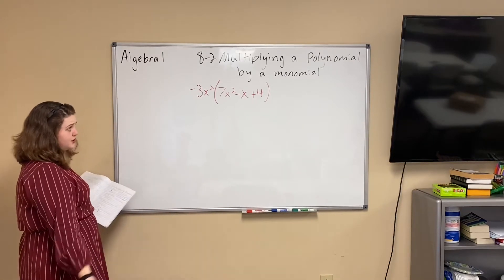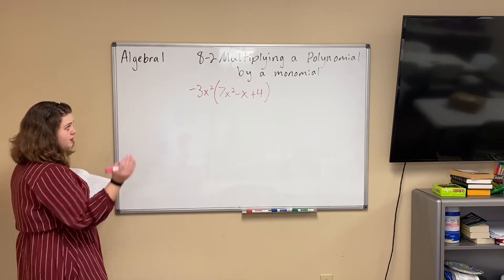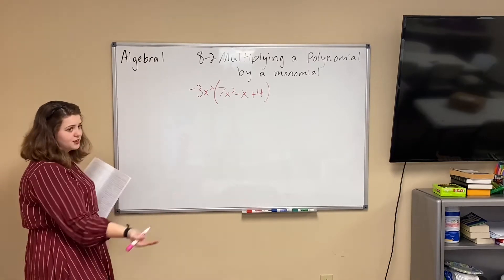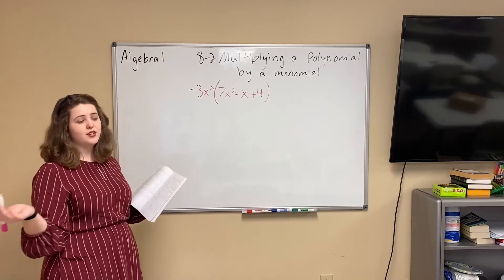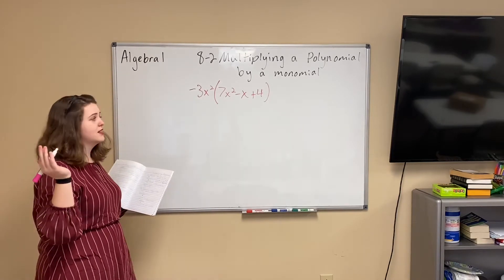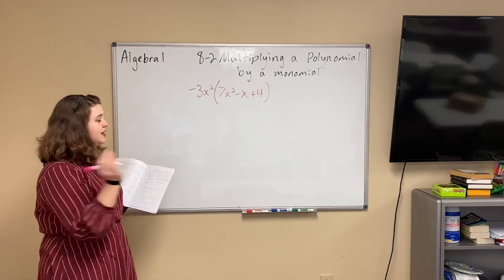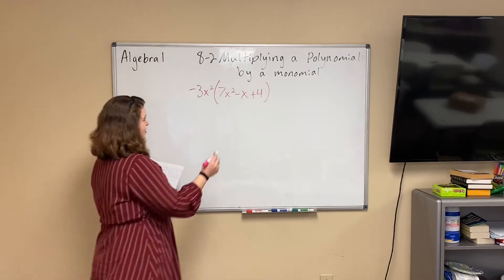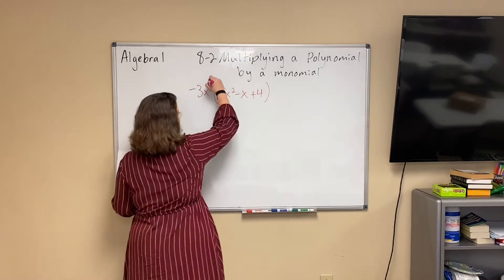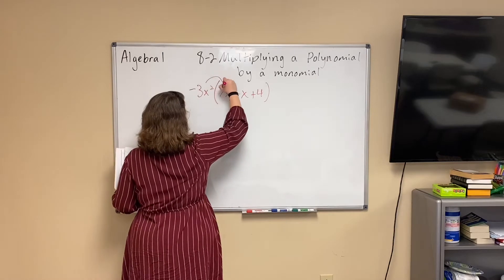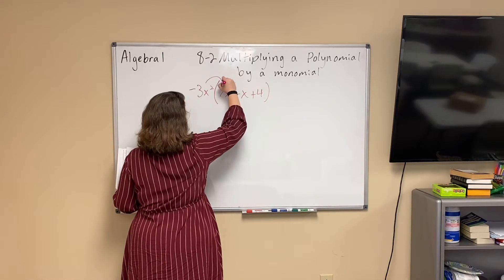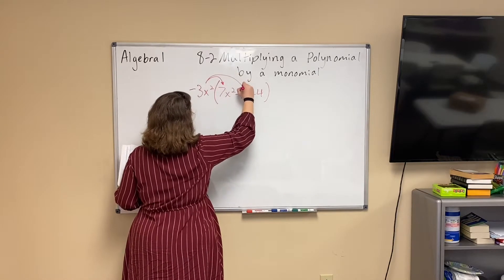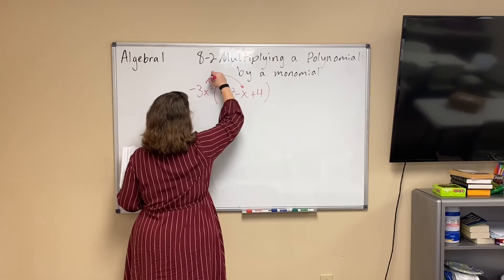Basically what you're going to do when you have one thing on the outside times several things on the inside, you're going to do the same thing you know to do with any number — use the distributive property. Multiply the thing on the outside by all of the pieces on the inside.